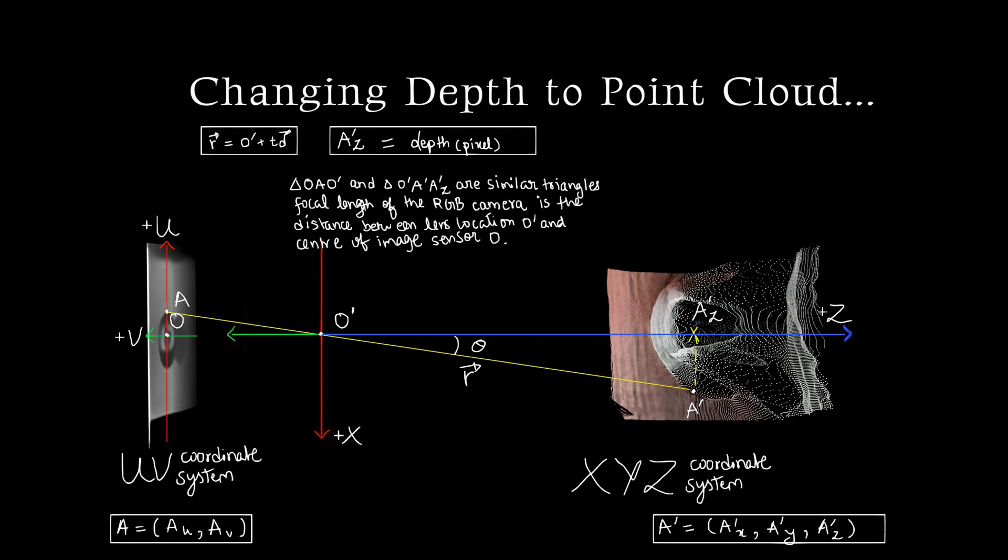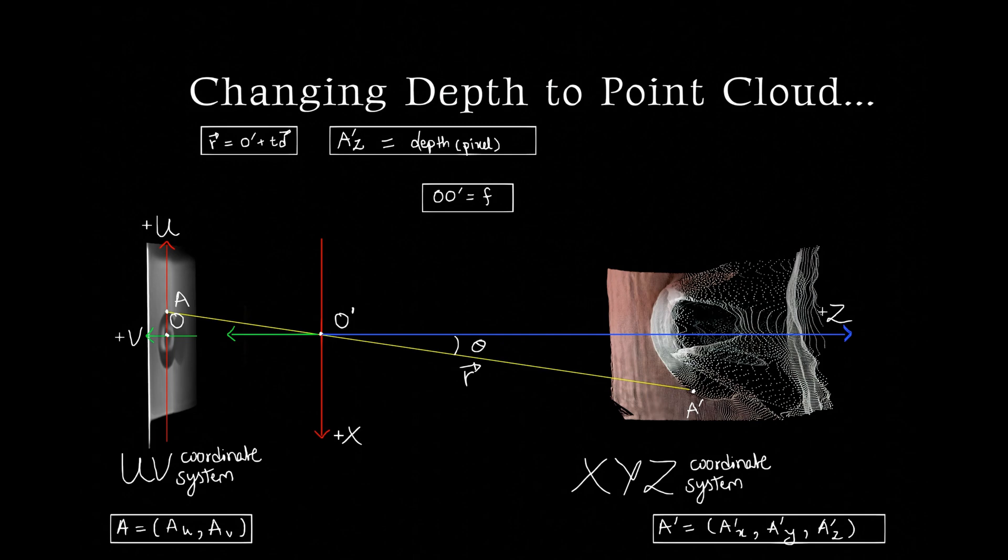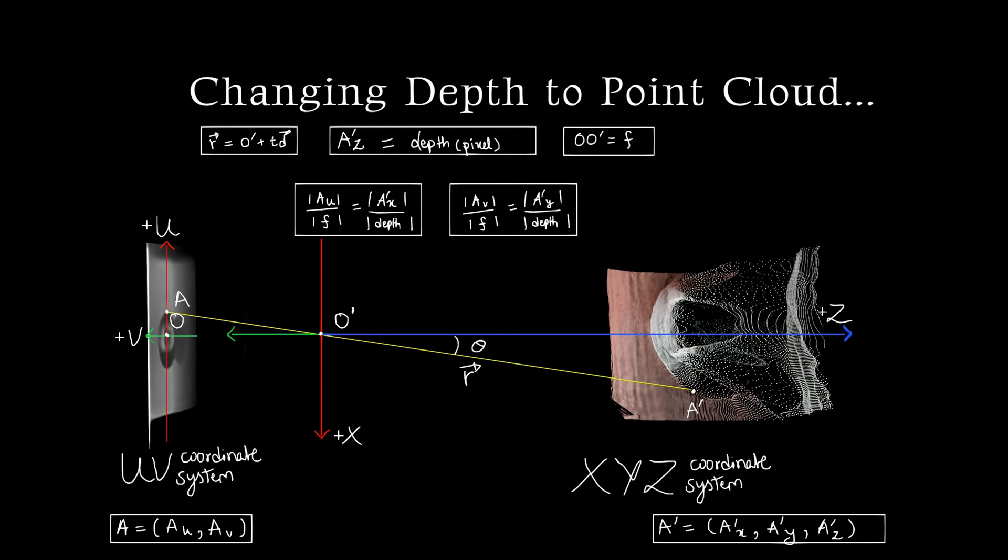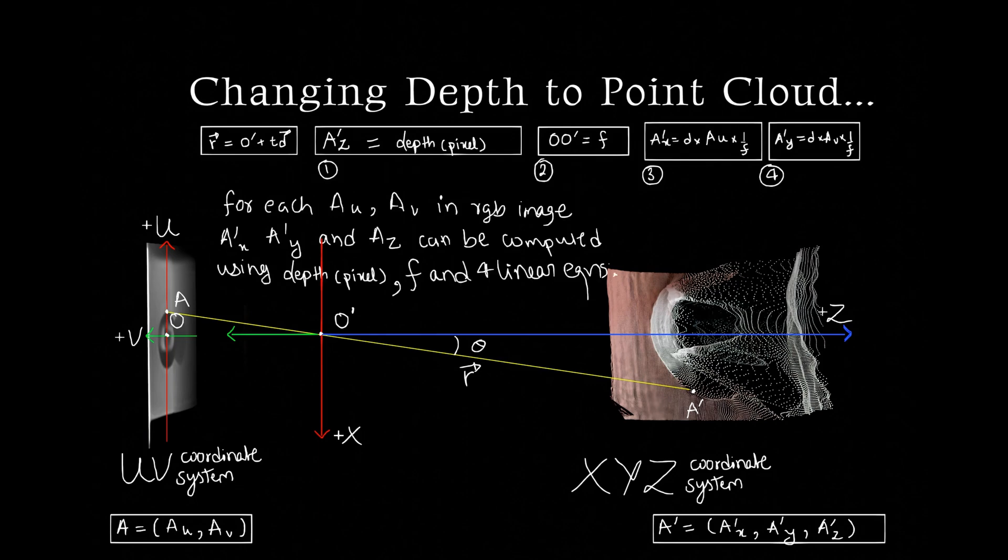Next, we can note that triangles O'A'Z' and O'OA are similar triangles. Using the angle theta, which is common in both triangles, A'_x and A'_y can be computed using u, v, and A'_z. So for each pixel in the depth map, we can calculate the 3D point in the point cloud.